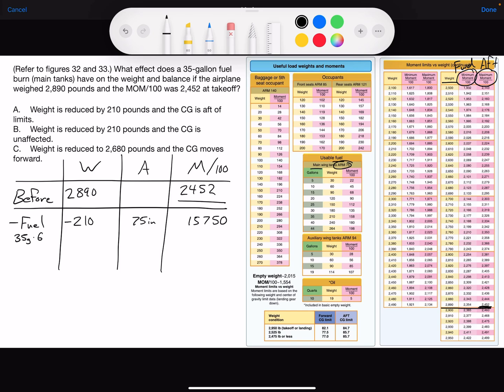Now the moment's in hundreds, so I'm going to put a decimal point right here, so it's approximately 158, which is what we see when we look at the gallons on the table. 35 gallons weighs 210 pounds, moment of 158, and we're getting rid of that fuel, so I'm going to put a minus sign there.